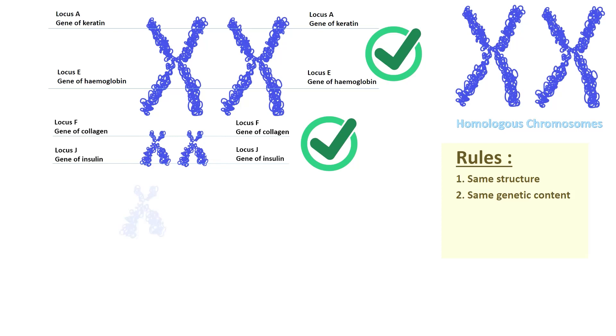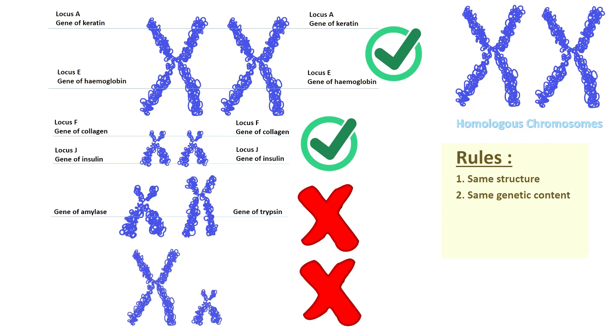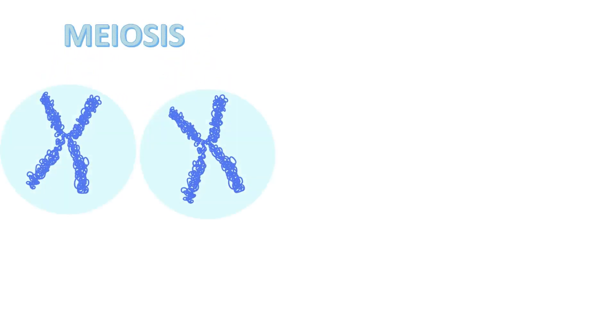Meanwhile, this pair is not considered as homologous chromosomes, and so is this one. During meiosis to produce gametes, these homologous chromosomes will separate and end up in different gamete cells. This means that each of our parents only contributes one copy of each gene towards fertilization.